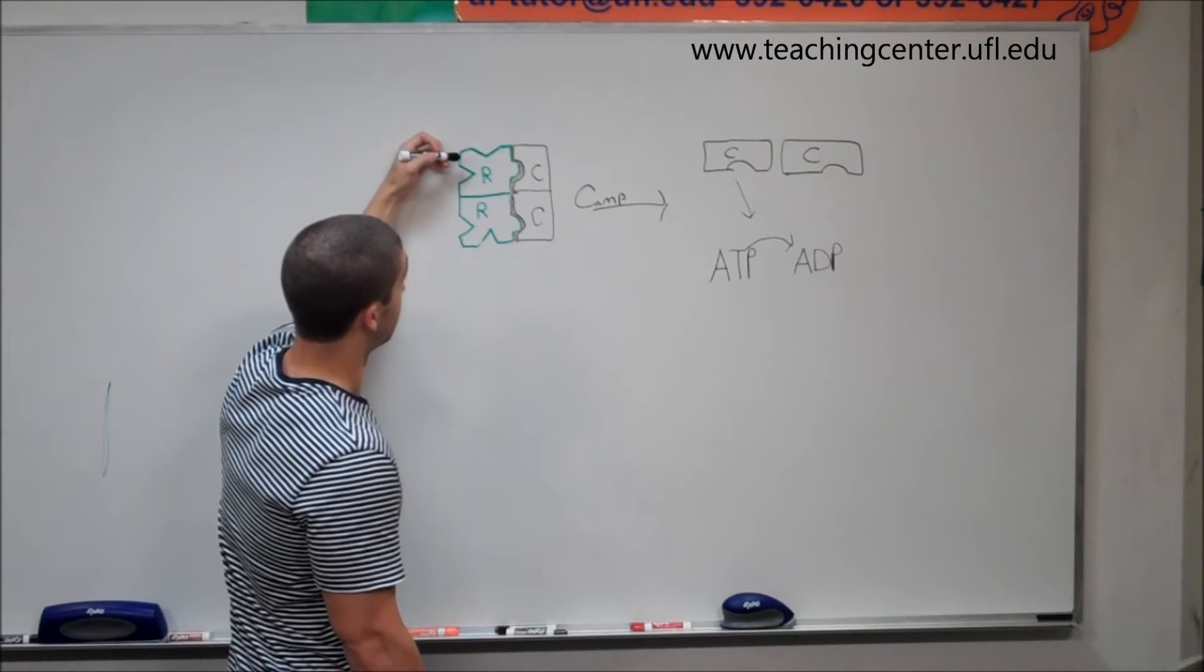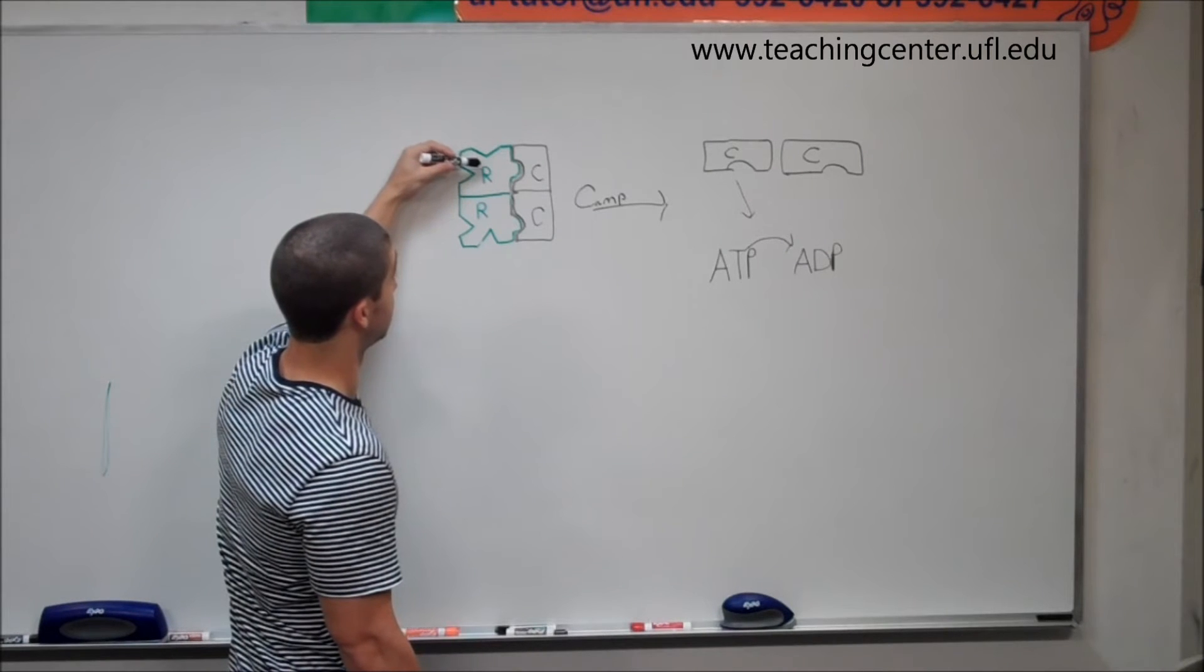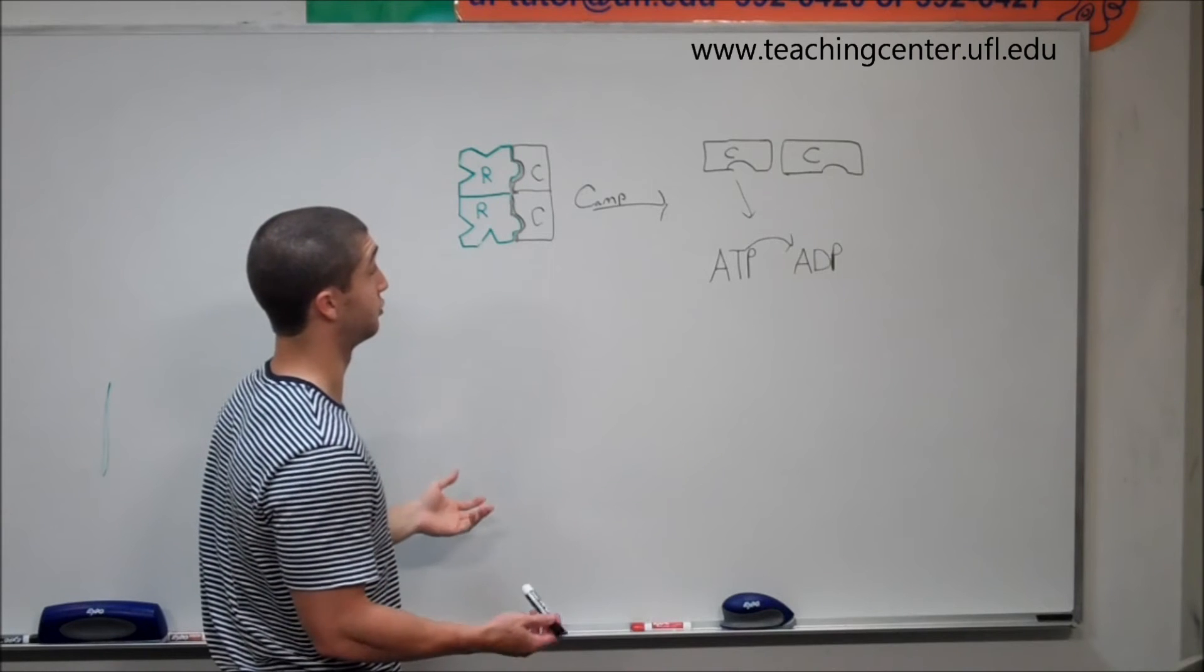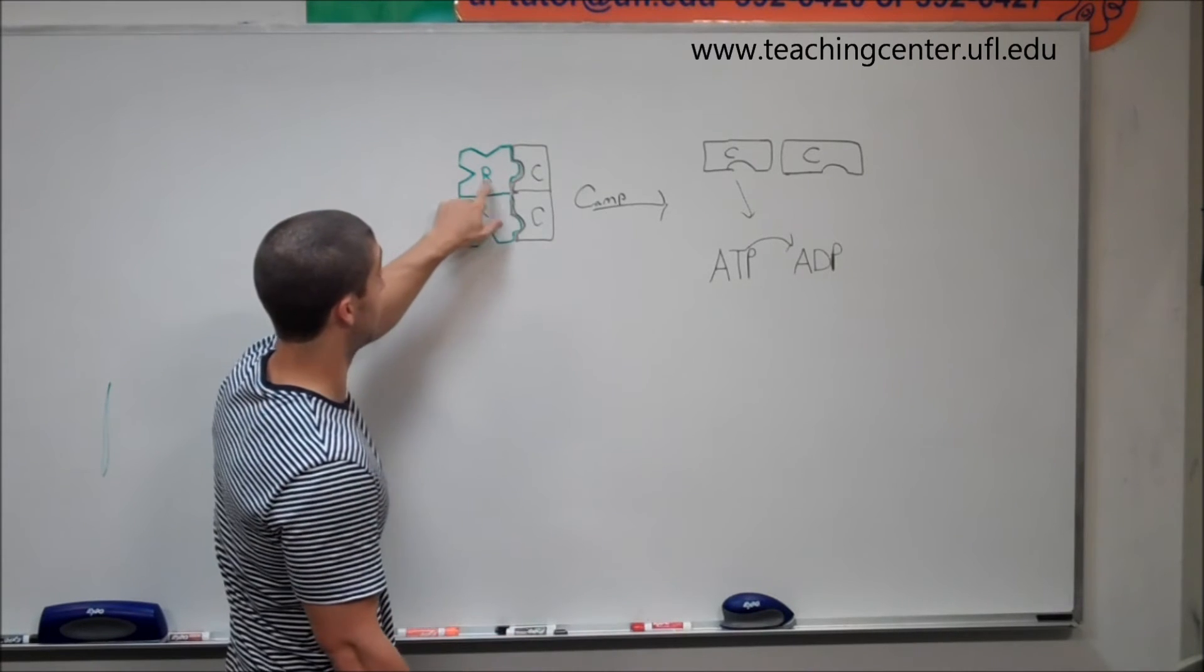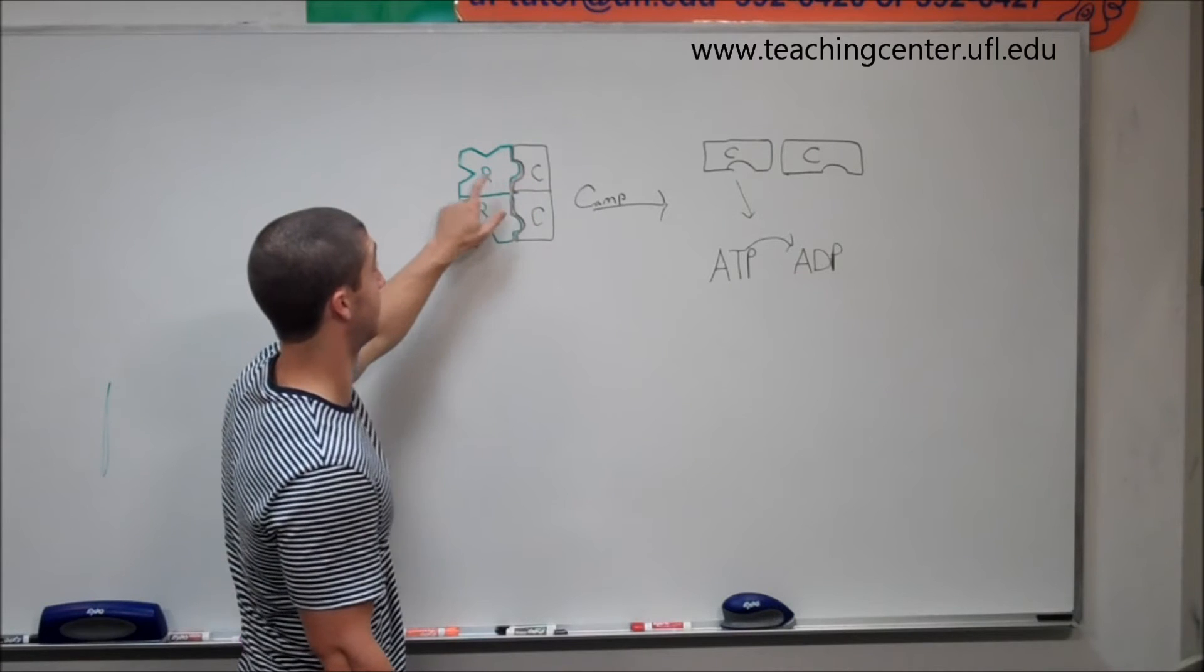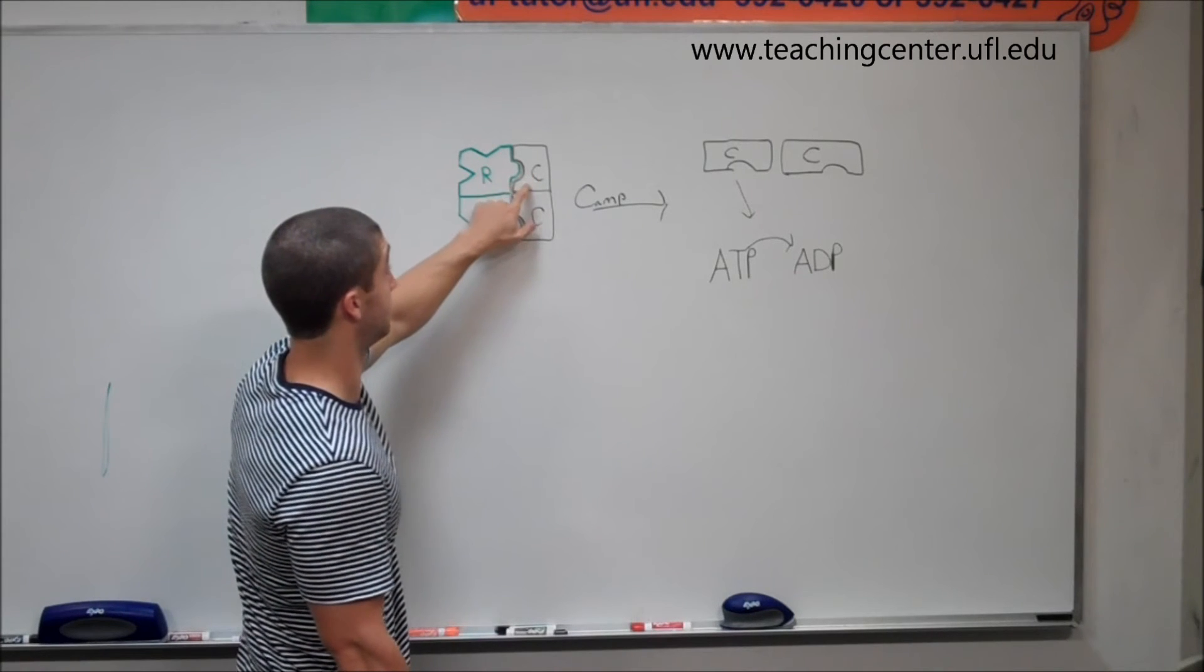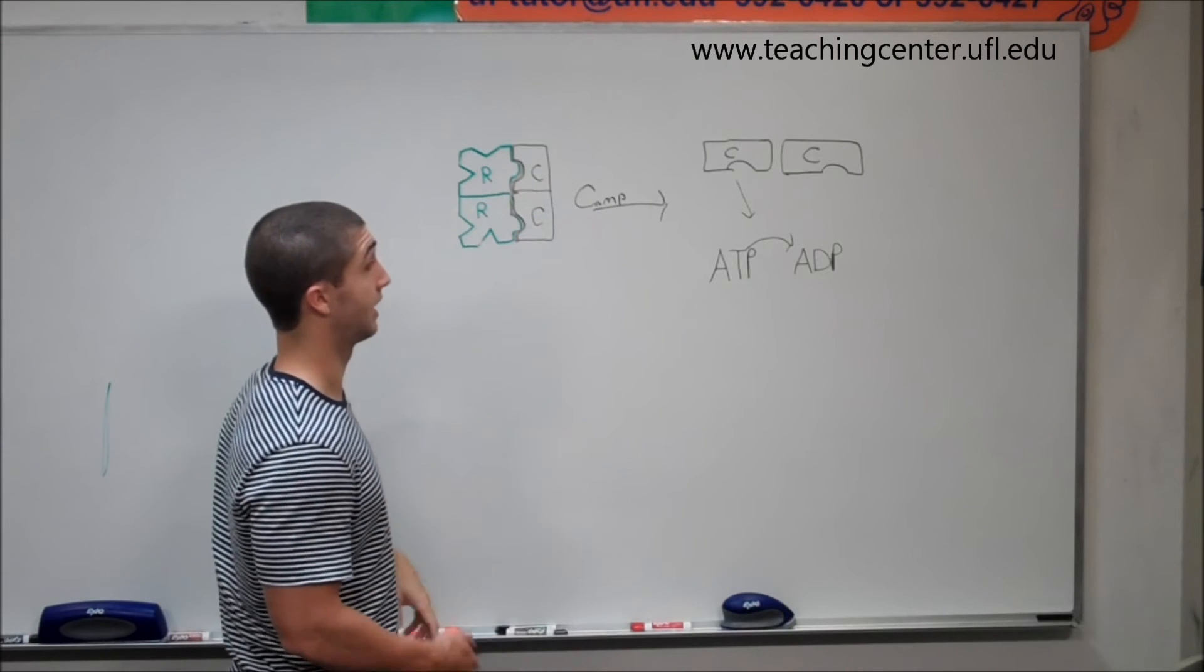You could also have a mutation in the R subunit that's going to not help it regulate the catalytic site, which would mean it would be constantly on because the R site helps regulate the catalytic site.